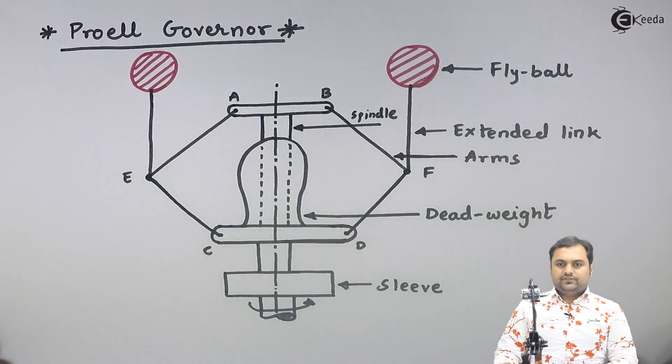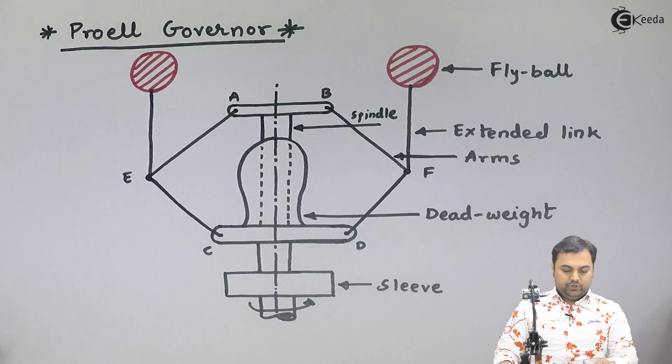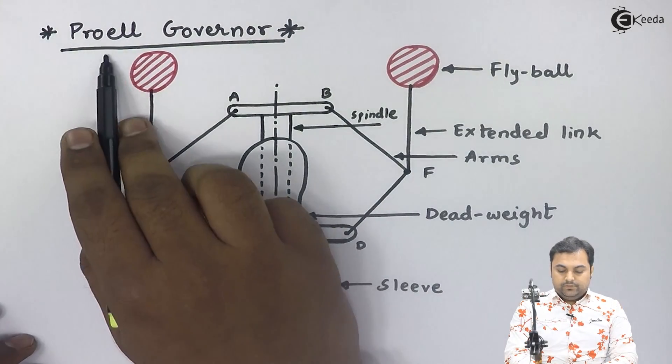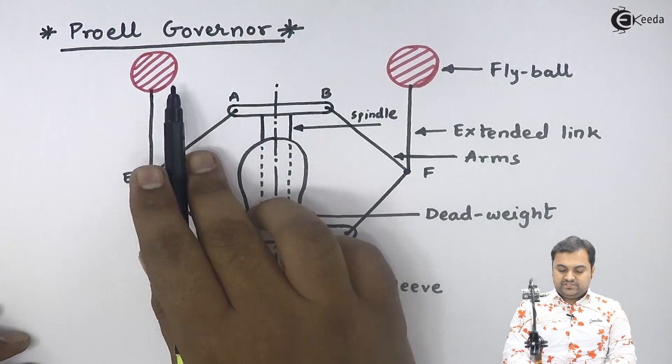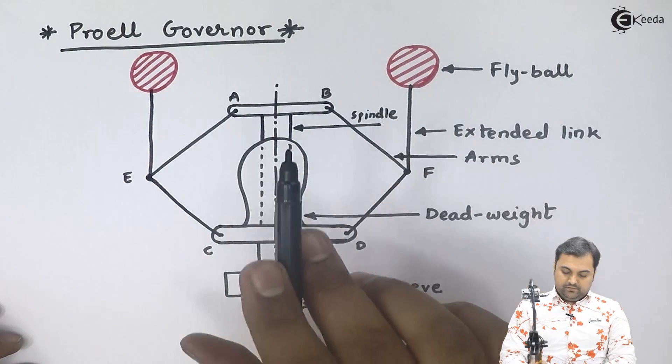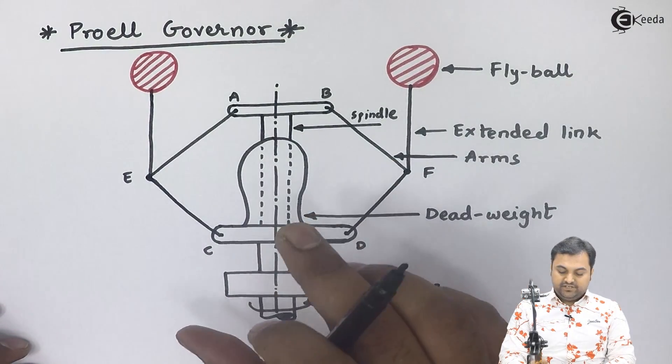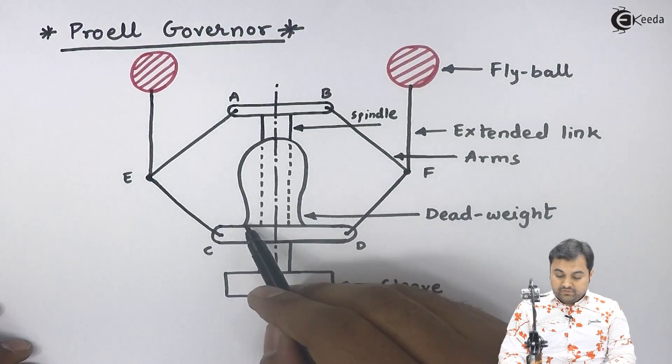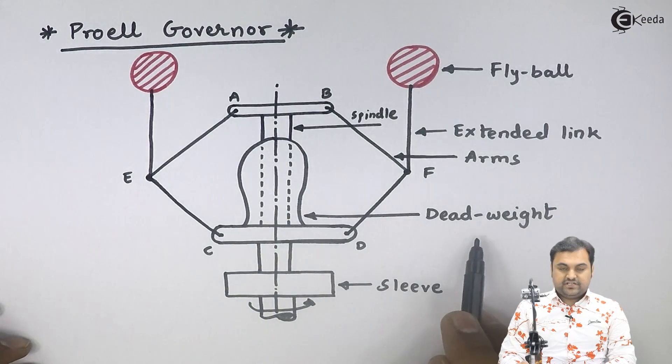The next type of governor we are seeing is called the Proell governor. Proell governor is also a centrifugal governor and it comes under the category of loaded governor where we have dead weight.